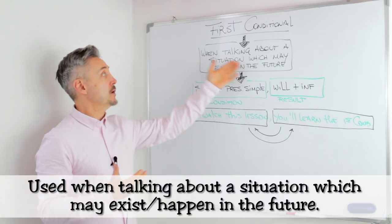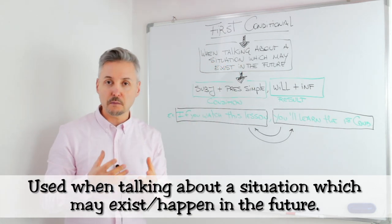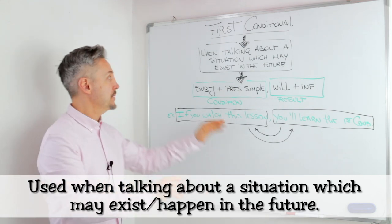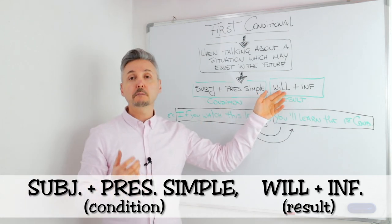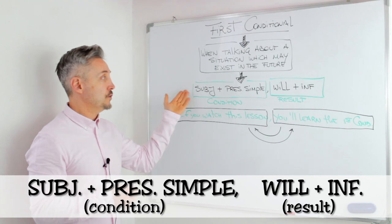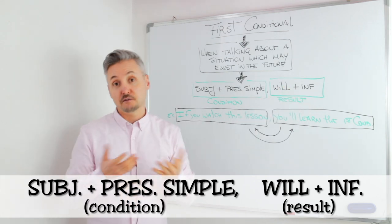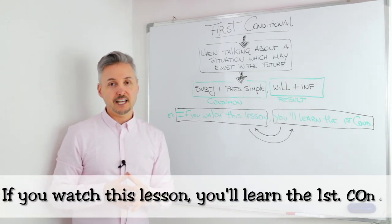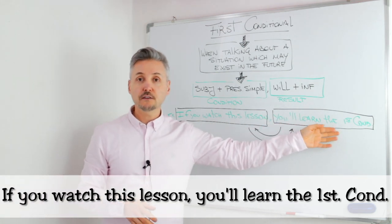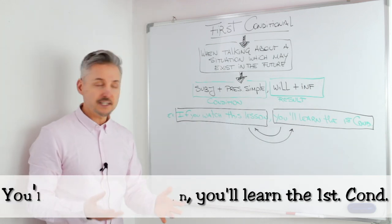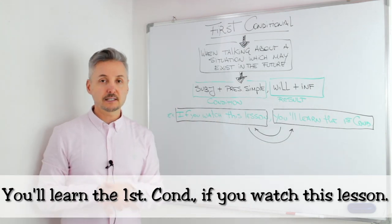We use the first conditional when talking about a situation which may exist in the future, and thus is a probable situation. We have a formula: subject plus present simple, then will plus infinitive. The first part we call the condition, and the second part we call the result — just like the introductory example: if you watch this lesson, you'll learn the first conditional. I could have said it the other way: you'll learn the first conditional if you watch this lesson. It's the same thing.